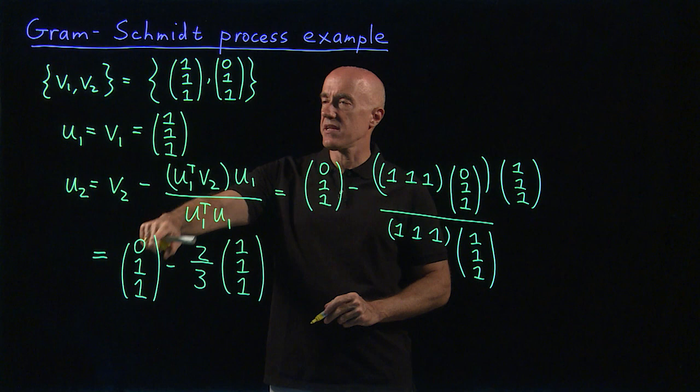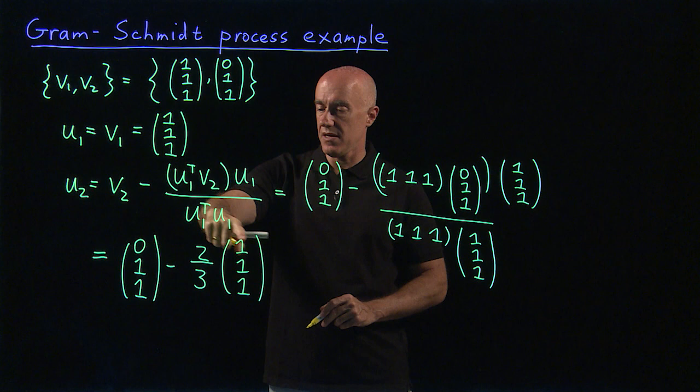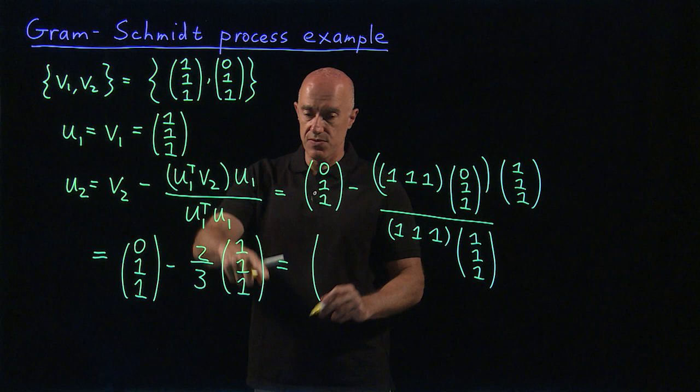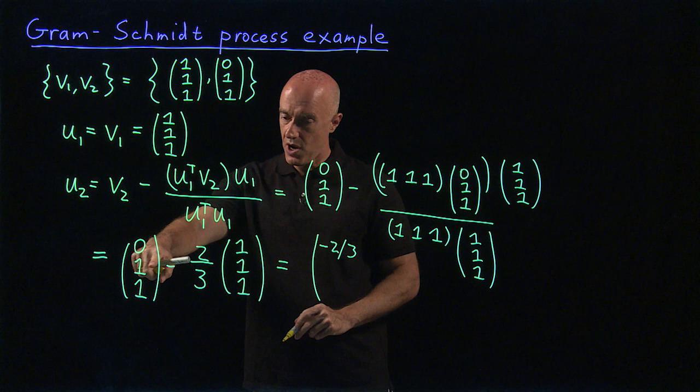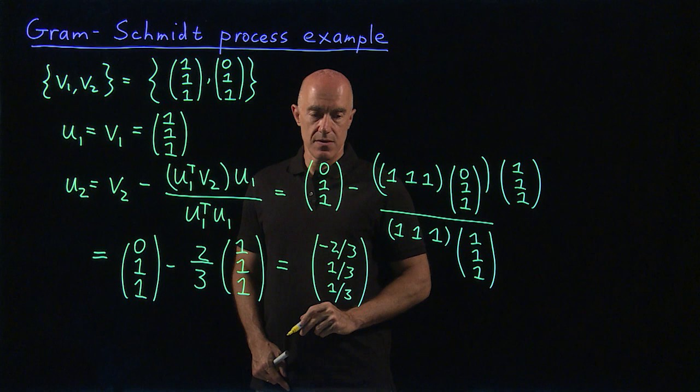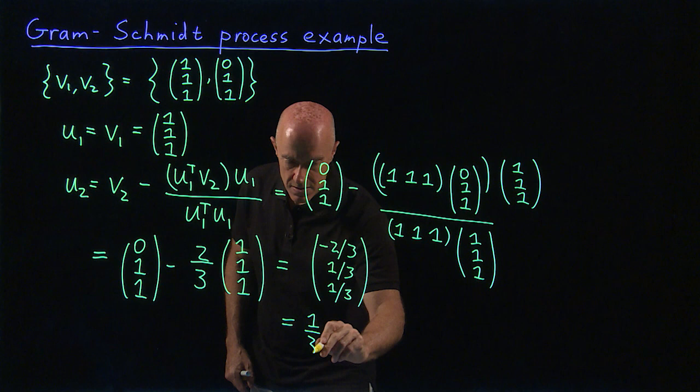So we're subtracting from V2 the piece that is along V1, which works out to be 2/3 (1,1,1). And then we get 0 minus 2/3, so minus 2/3. 1 minus 2/3 is 1/3. And 1 minus 2/3 is 1/3. So this is just equal to 1/3 times (-2,1,1).